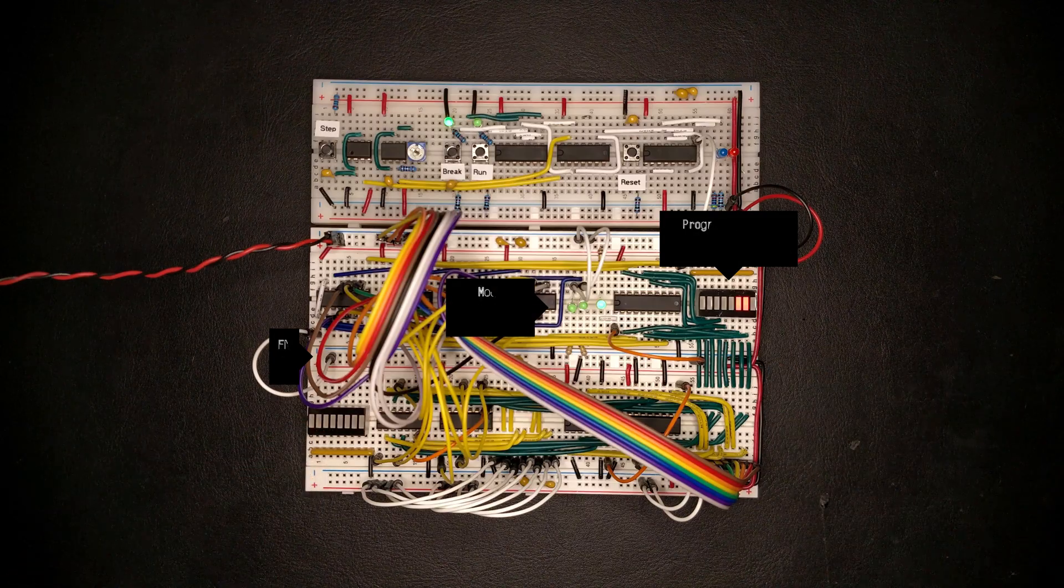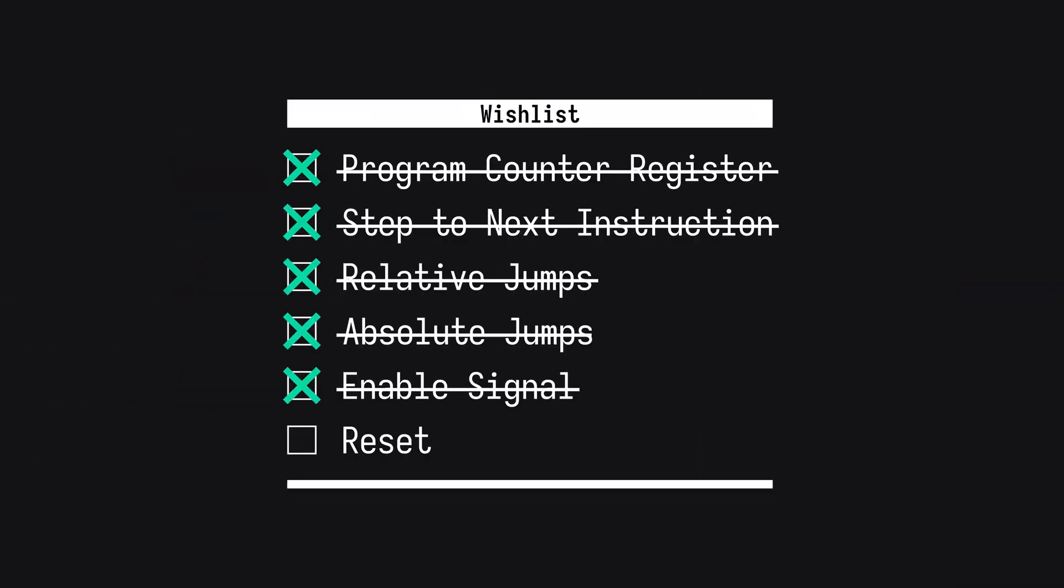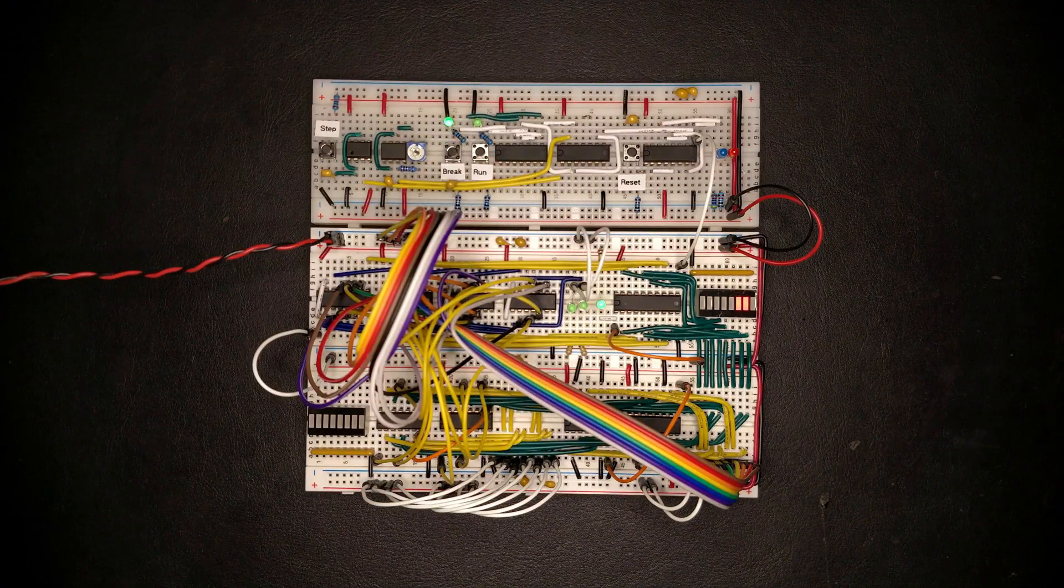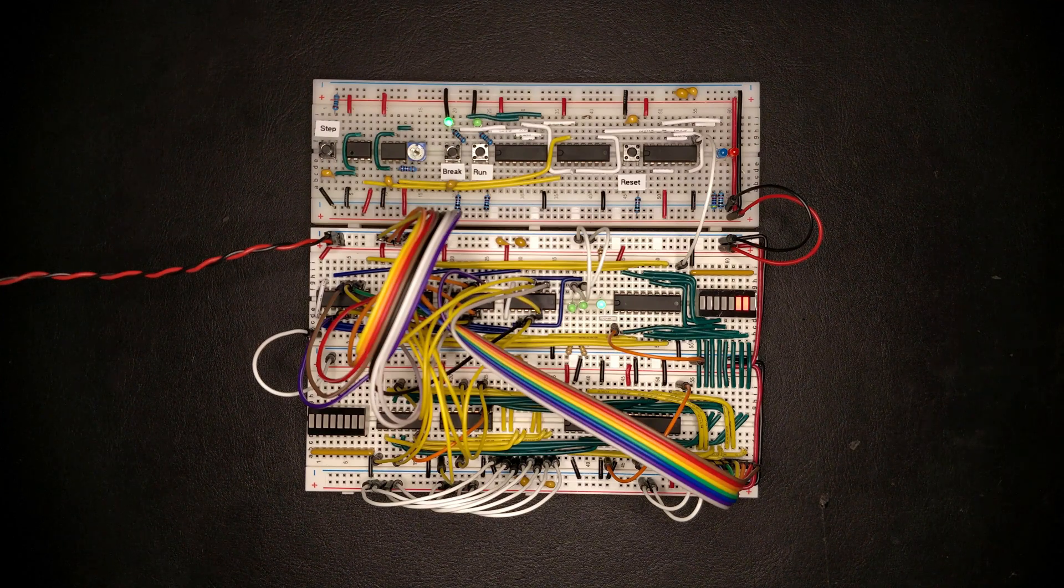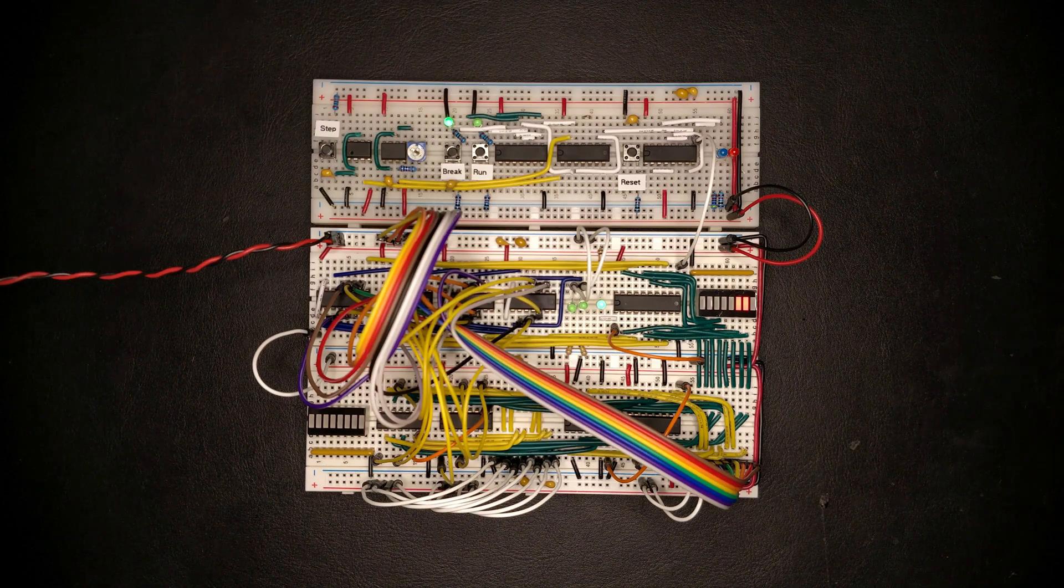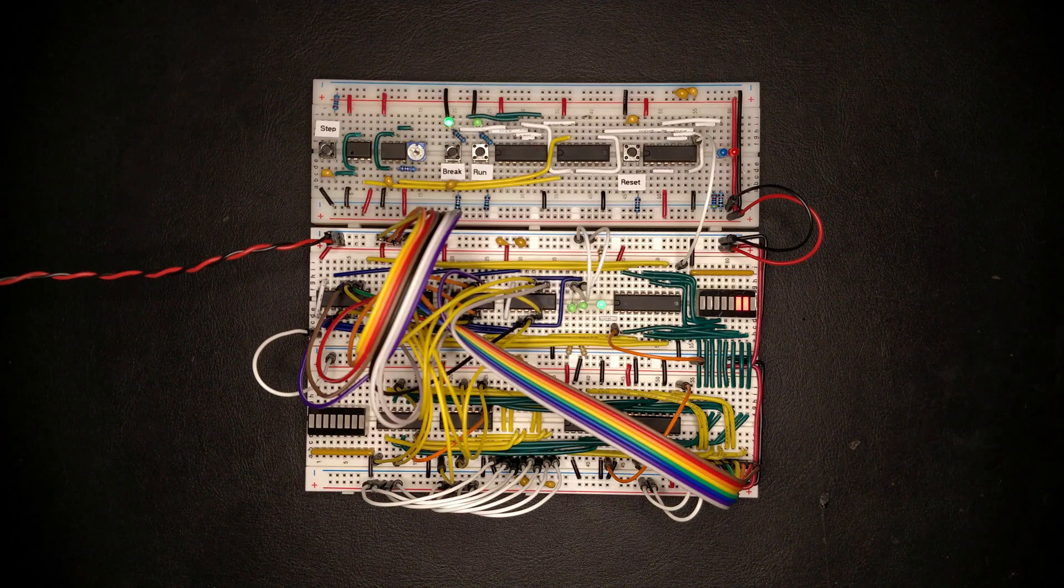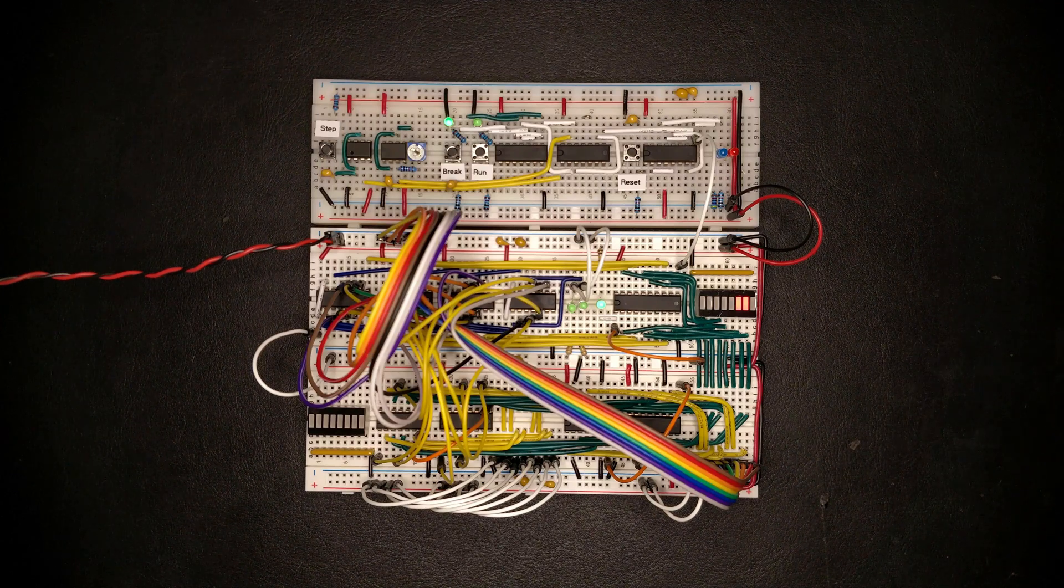So with these multiplexers in place we can not only do absolute jumps but also select the mode in which the program counter should operate. In the next episode I would like to spend some time thinking about how we can reset this program counter such that we always start executing a program from the top. Thanks a lot for watching, like and subscribe if you'd like to see more of this and see you next time.